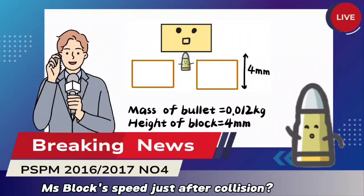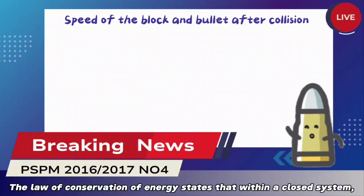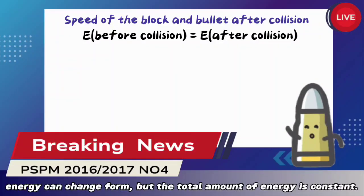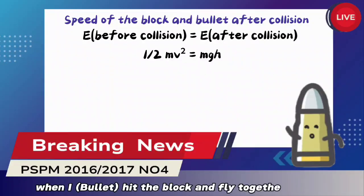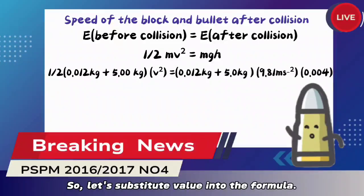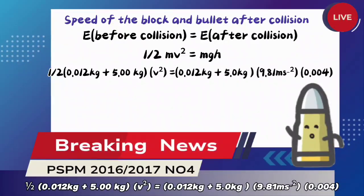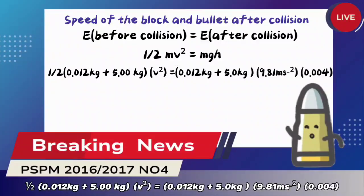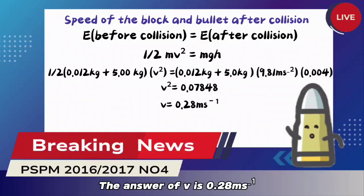Hi Macebullet, what is your and Maceblock's speed just after collision? Hi everyone, I'm Macebullet. Do you know conservation of energy? The law of conservation of energy says that within a closed system, energy can change form but the total amount of energy is constant. It means that kinetic energy when I fly upwards is equal to potential energy when I hit the block and fly together in air. So let's substitute values into the formula: 1/2 times (0.012 + 5) kg times V squared equals (0.012 + 5) kg times 9.81 m/s squared times 0.004. Then V squared equals 0.07848, so V equals 0.28 m/s.